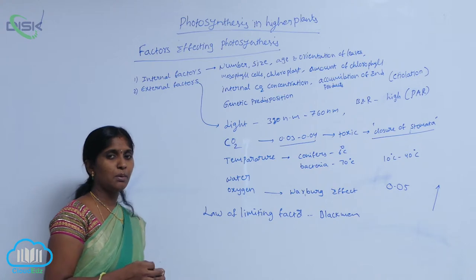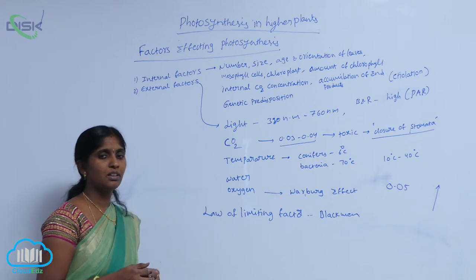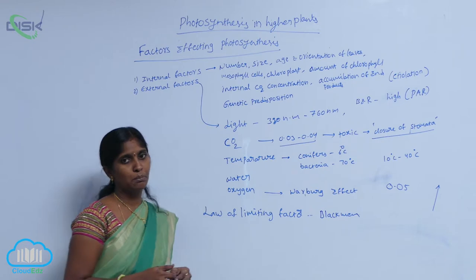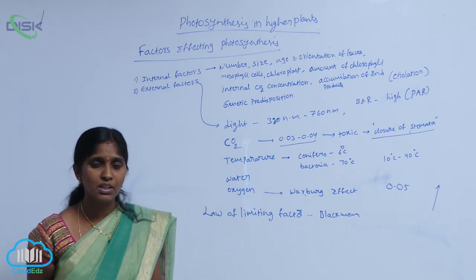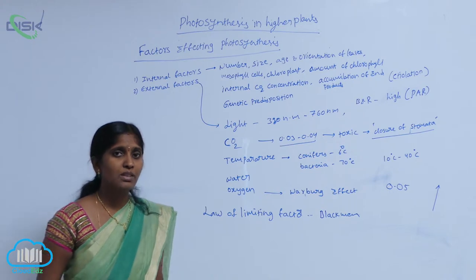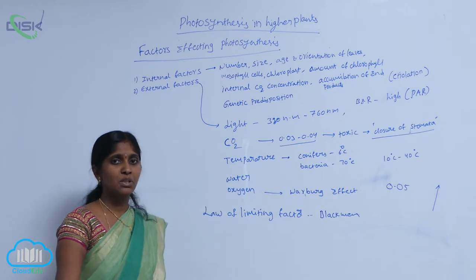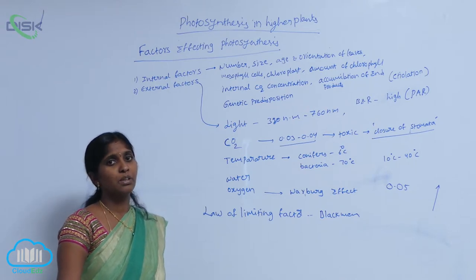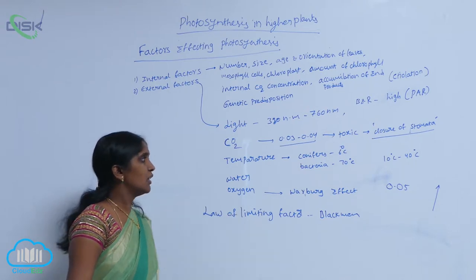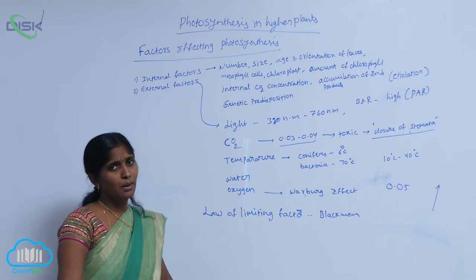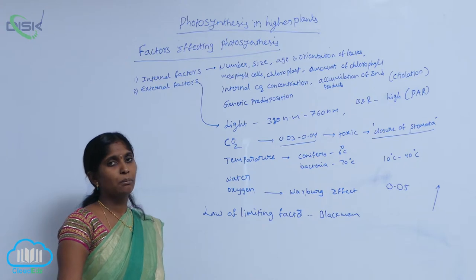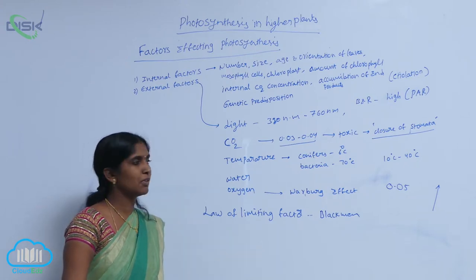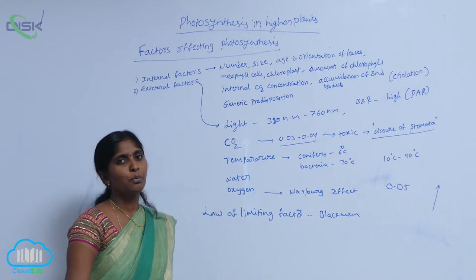Coming to temperature, there are C3 plants and C4 plants. In C3 plants, the optimum temperature for photosynthesis is 15 degrees to 25 degrees. Whereas in C4 plants, the optimum temperature required is 35 degrees to 45 degrees. Conifers are also able to synthesize at low temperature — around 6 degrees.